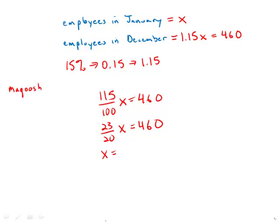I'm going to multiply by the reciprocal, so I get 460 times 20 over 23. The last thing you want to do is start out by multiplying 460 times 20—absolute train wreck. You want to cancel before you multiply.